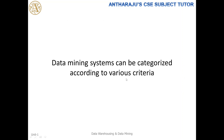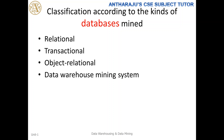Data mining systems can be categorized according to various criteria. I will explain each criterion one by one. The first criterion is the database being used. Depending on the type of database, the classification of the data mining system will change. The categories include: relational data, transaction data, object-relational data, and data warehouse mining systems.